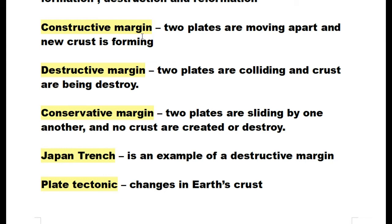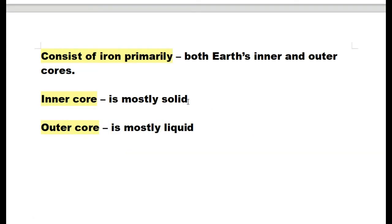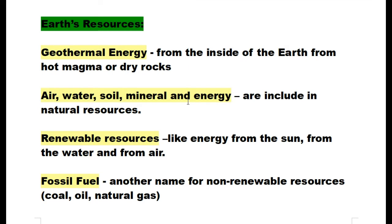Japan Trench is an example of a destructive margin. Plate tectonics shape earth's crust, which consists primarily of iron. Earth's inner core is mostly solid and the outer core is mostly liquid.